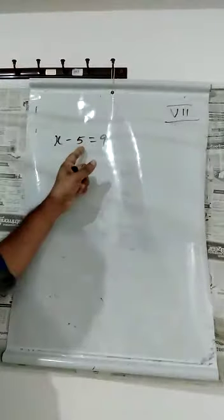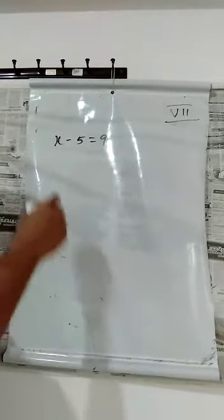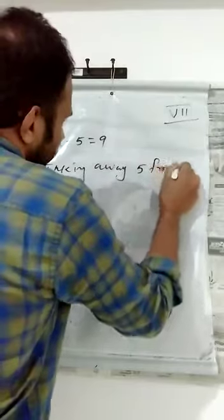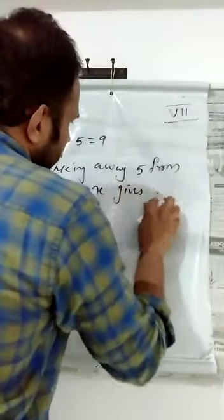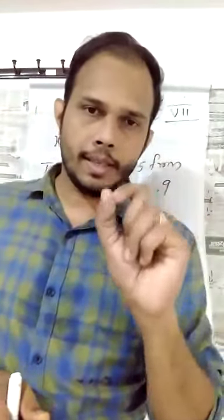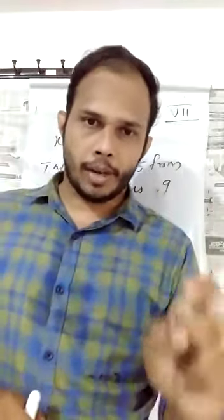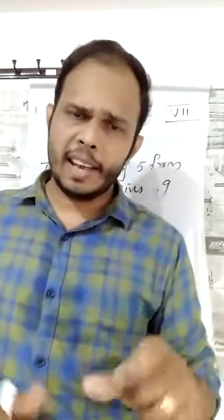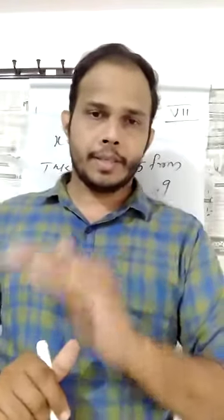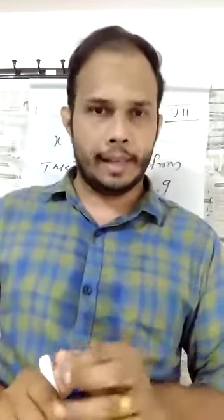Otherwise you can write: taking away 5 from x gives 9. Or, 5 subtracted from x, the result is 9. Any way you can write — it doesn't matter — but the statement should be correct. That is the mathematical equation, and we made this statement.